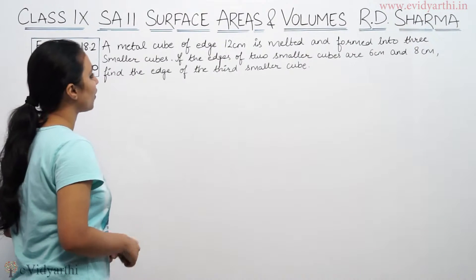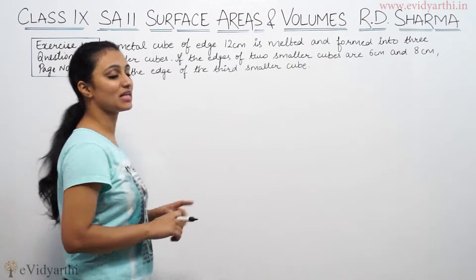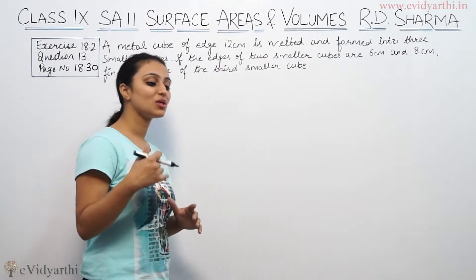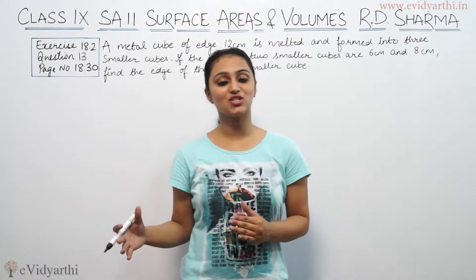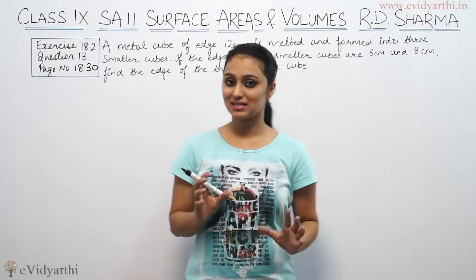It says a metal cube of edge 12 cm is melted and formed into 3 smaller cubes. If the edges of two smaller cubes are 6 cm and 8 cm, find the edge of the third smaller cube. Once you melt one metal cube, you will make 3 small cubes. Once you melt the cube or break the cube, it will be made into someone else. That means volume will be same. Surface area will vary but volume will be same.